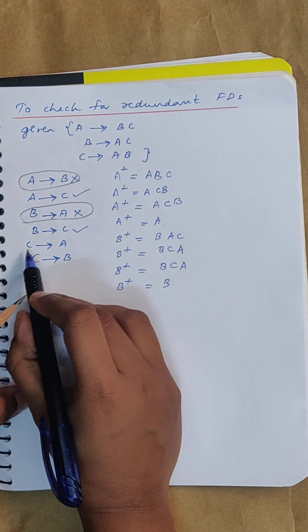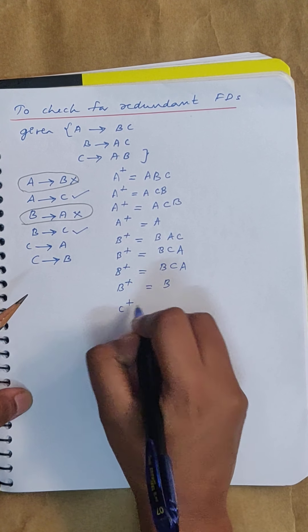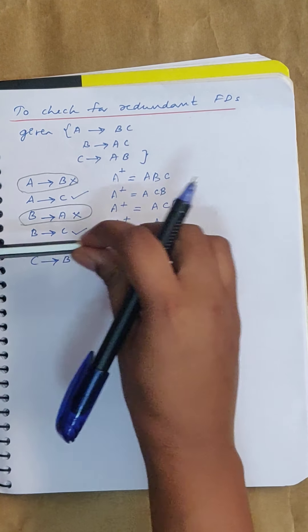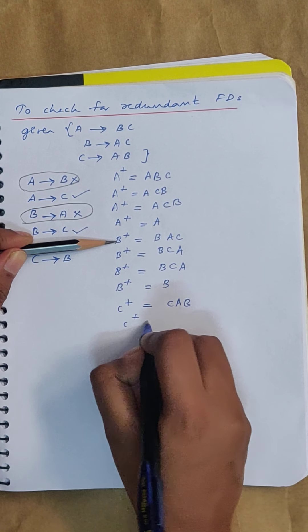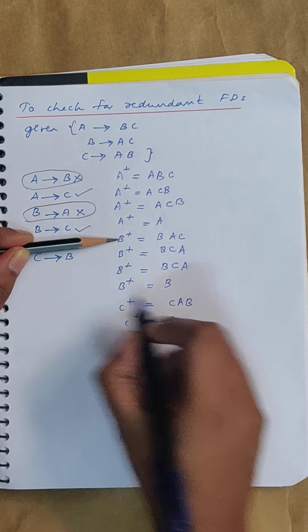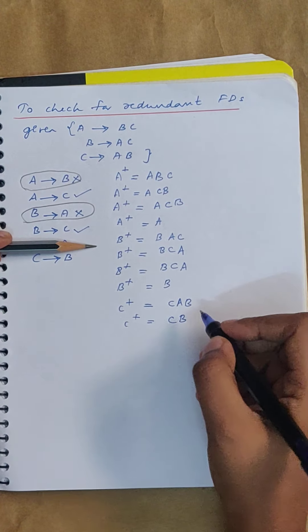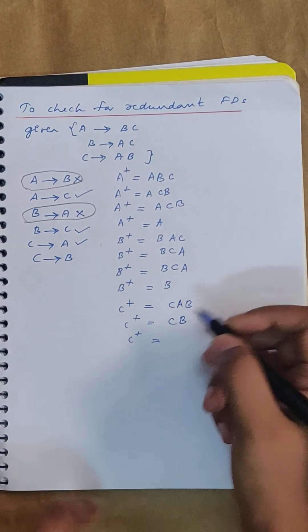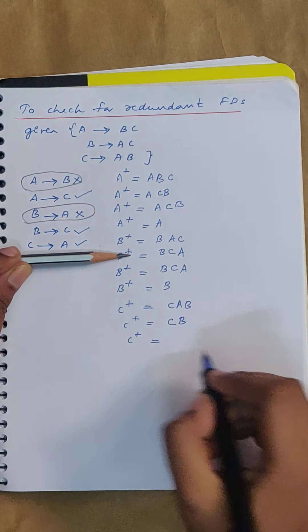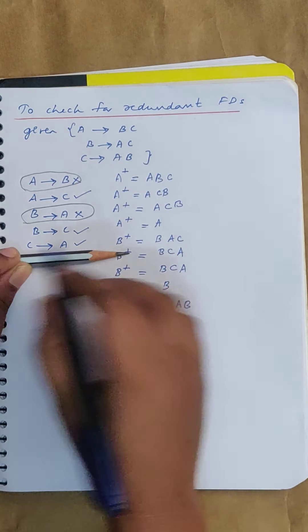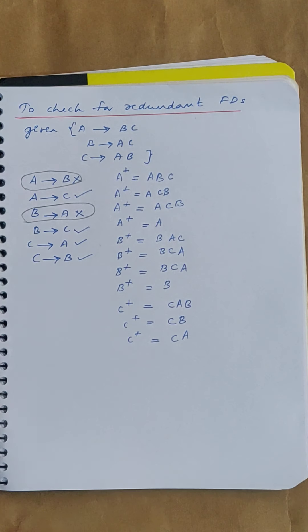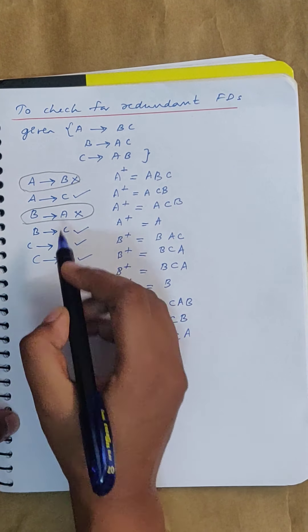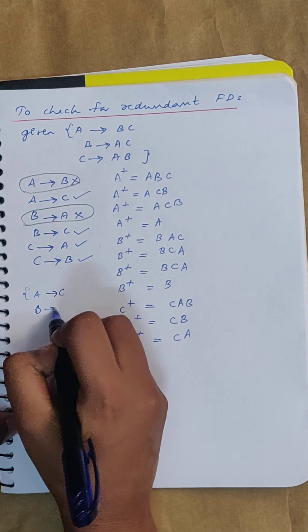Check C→A and C→B. Find C closure with C→A: you get C, A, then from C→B you get B — {C, A, B}. Without C→A, find C closure: you get C, then from C→B you get B, but you cannot get A — so C→A is essential. Find C closure without C→B: you get C, then from C→A you get A, but you cannot get B — so C→B is also essential. The minimal cover is therefore: A→C, B→C, and C→AB.